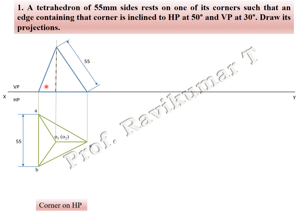If you are looking from the front of the object, it also looks like a triangle. But only one side has a true length, and that one side is from the corner. So from the corner side it will have a true length of 55 mm.